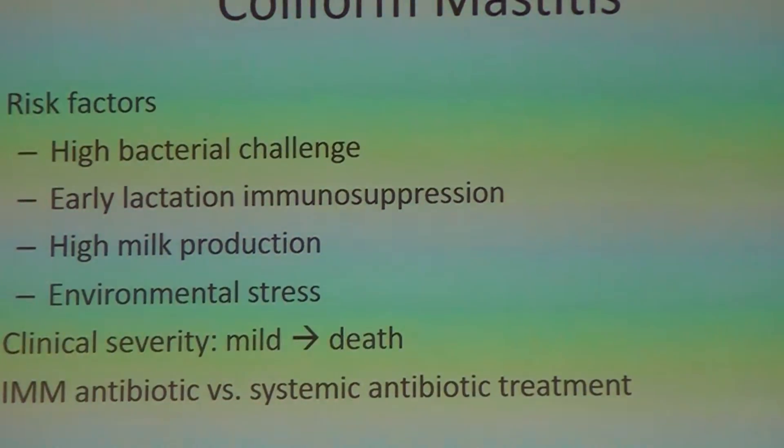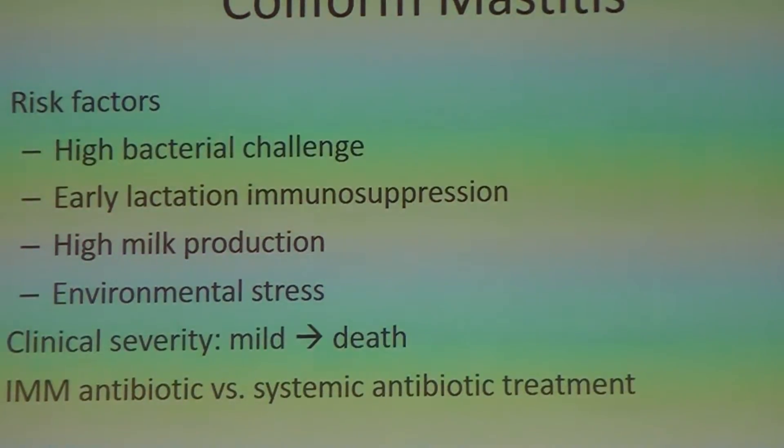Another risk factor is transition cows — those that have just gone through the calving process. We're asking a lot of these cows; they're like superhuman athletes. We're asking them to go from pregnancy, have a calf, and start milking at an incredibly high level shortly after calving. The first day they may produce 30 to 40 pounds of milk; by the third day they're probably up to 80 or 90 pounds on some dairy farms. That is immunosuppressive, and when we suppress their immune system and add in a high bacterial challenge, we increase their risk for mastitis. Environmental stresses also play a role — the Southeast sees a lot more coliform mastitis because of more heat and humidity.